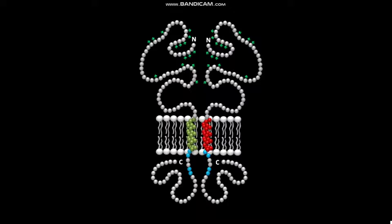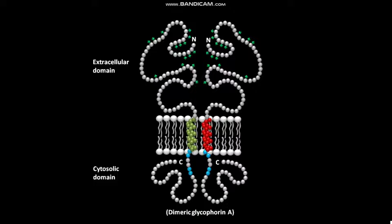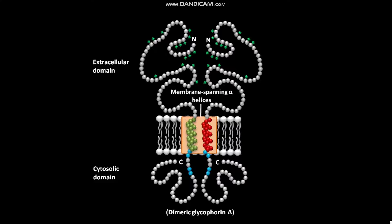This is a dimeric glycophorin A. The dimeric glycophorin A has an extracellular domain and a cytosolic domain. This dimeric glycophorin A shows major sequence features and its relation to the membrane. Dimeric glycophorin A has two membrane-spanning alpha helices.